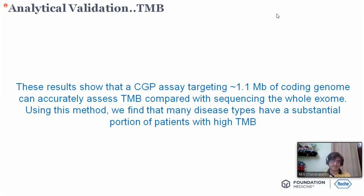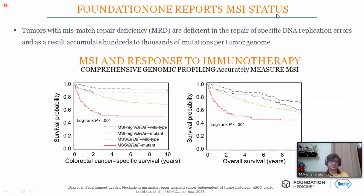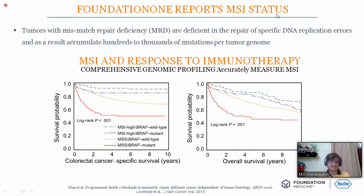An analysis of 100,000 human cancer genomes reveals the landscape of TMB. Results show that a CGP assay targeting 1.1 MB of coding genome can accurately assess TMB without sequencing the whole genome. Many disease types have a substantial portion of patients with high TMB. For MSI-high patients — those with mismatch repair deficiency and high microsatellite instability — these patients are susceptible to immunotherapy. In colorectal cancer, MSI-high with BRAF wild-type has the best survival; MSI-high with BRAF mutation still responds to IO; MSI-low/MSS with BRAF wild-type does poorly; and MSS with BRAF mutation has the worst outcome.